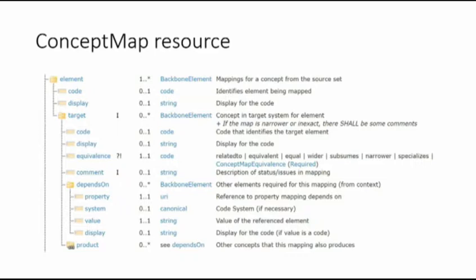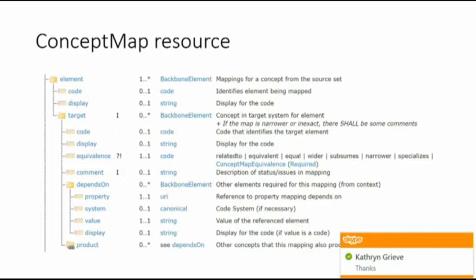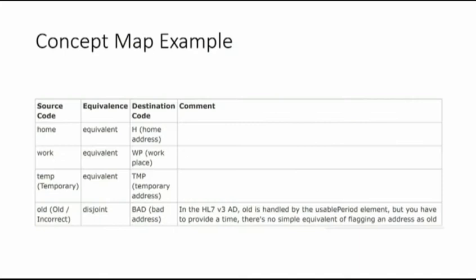In the same sense that we can map terminologies, we can treat FHIR resources and version 2 structures as a terminology of elements. Each FHIR resource defines a set of concepts — a hierarchy of classes — and we can map from concept model to concept model. Here's an example using home address use codes: the four FHIR codes and their mapping to version 2. In the terminology project within FHIR, we use these quite a lot and are gradually building them up in sophistication.